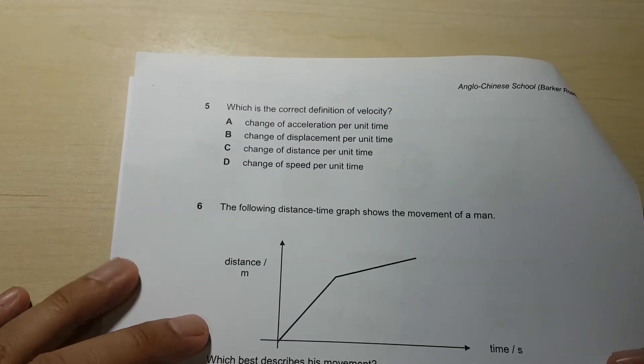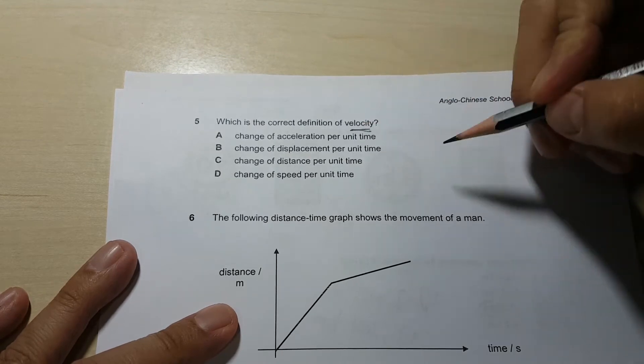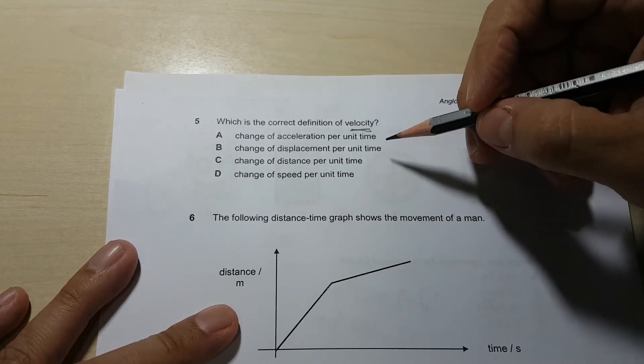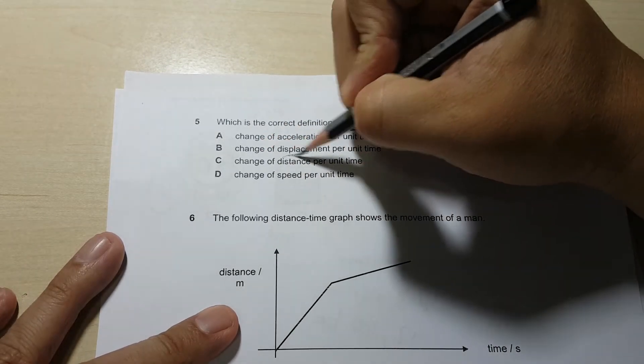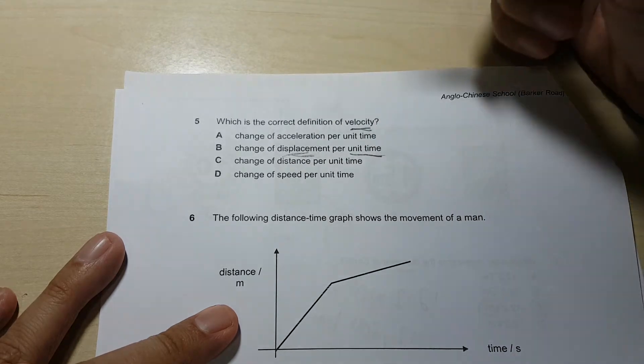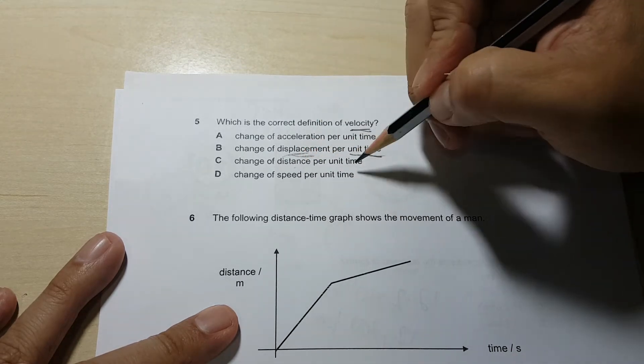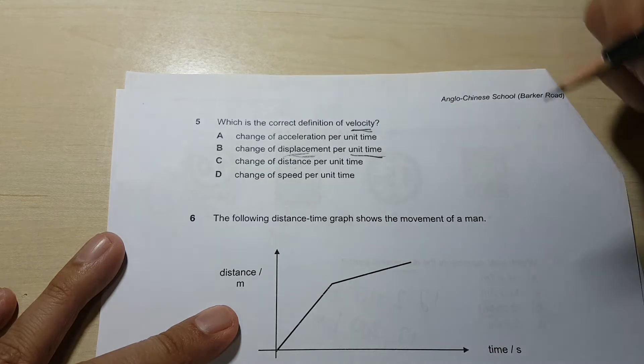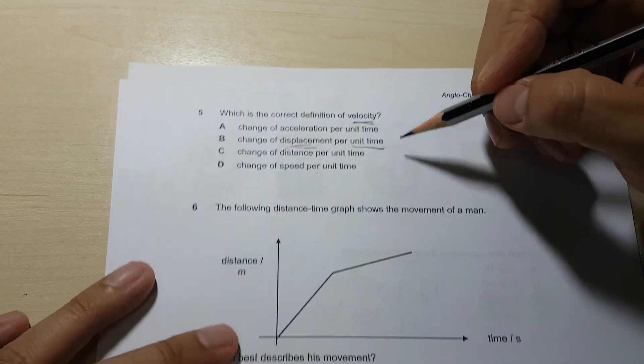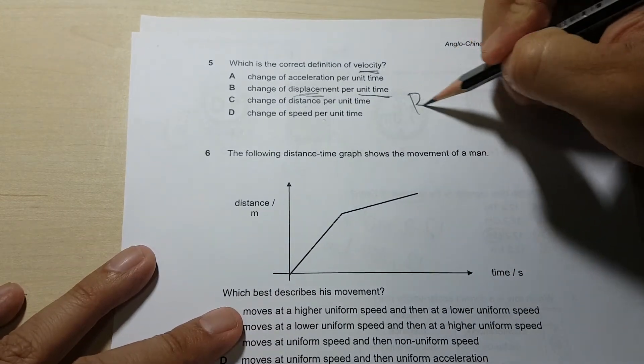Going on to the next question. Correct definition of velocity - this one just refers to definition, so just pretty straightforward. Answer is change of displacement per unit time. Many of you actually chose distance per unit time. This would be speed, and this is acceleration. So answer in this case would be B.